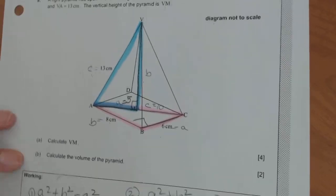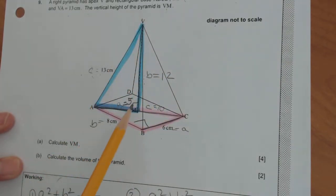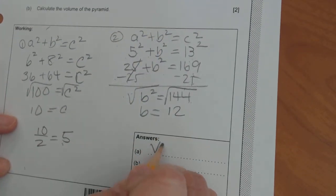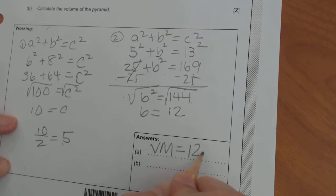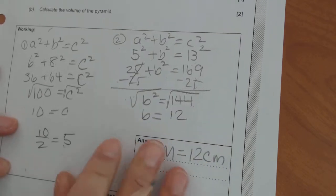So that height B equals 12. So the height between V and M, the distance is going to be 12 centimeters. So I'm going to write that the distance between V and M equals 12 centimeters. Let's see what part B wants.